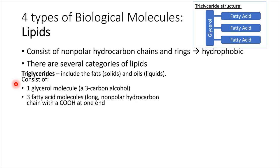Let's take a look at an example of a lipid: triglycerides. This is the type of lipid that is present in a lot of foods. Triglycerides consist of a glycerol molecule and three fatty acid chains attached to it. This is a very generic triglyceride structure. We're going to focus in on these fatty acid chains for just a moment and look at some possible variations on them.